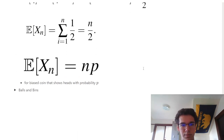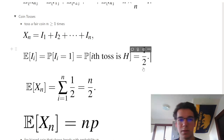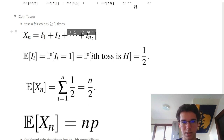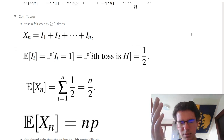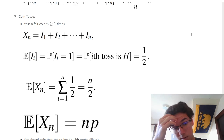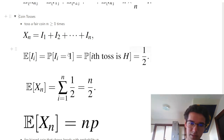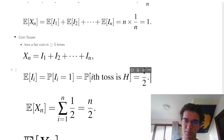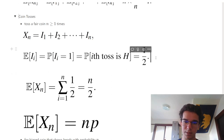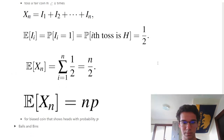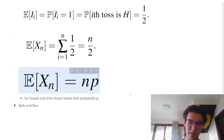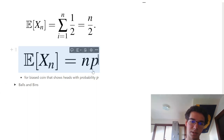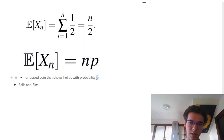For coin tosses: flip a fair coin n ≥ 1 times. Each indicator event I_i is the event that the ith coin is heads. The expected value of each indicator is 1/2. Summing over n tosses gives n/2. This generalizes as n times the probability of landing on heads, and for biased coins, we use probability P instead of 1/2.